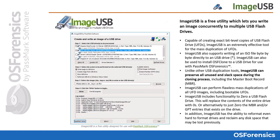ImageUSB is another free utility that lets you write an image concurrently to multiple USB flash drives. Capable of creating exact bit-level copies of USB flash drives, ImageUSB is an extremely effective tool for mass duplication. It can also be used to install OSFclone to a USB drive for use with OSForensics. Unlike other USB duplication tools, ImageUSB can preserve all unused and slack space during the cloning process, including the master boot record or MBR.